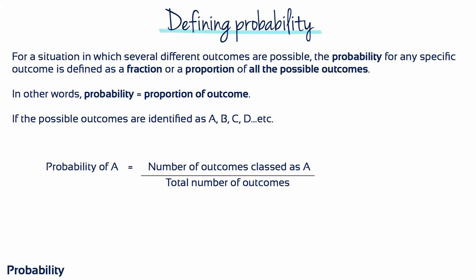Probability is a huge topic and we won't attempt to examine it all here. Instead, we'll concentrate on the few concepts and definitions needed for an introduction to inferential statistics. For a situation in which several different outcomes are possible, the probability for any specific outcome is defined as a fraction or a proportion of all the possible outcomes. In other words, probability equals proportion of outcome. If the possible outcomes are identified as A, B, C, D and so on, then the probability of A happening equals the number of outcomes classed as A divided by the total number of outcomes.